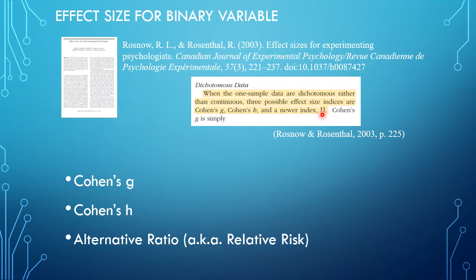It's mentioned on Stack Exchange, and the PASS sample size software from NCSS uses that as an effect size measure, and there they call it alternative ratio. I have separate videos on those, but the focus for this video is on Cohen's H.